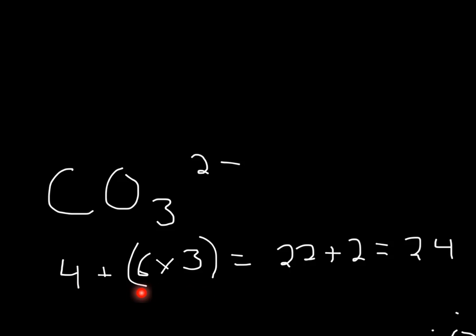So first, list out your valence electrons. It's going to be 4, and then 6, 6 times 3, will be 22. And then you have your 2- charge, which means you actually have 2 extra electrons. So it'll be 24.